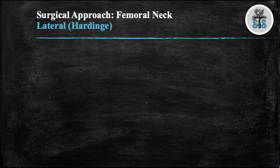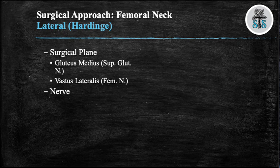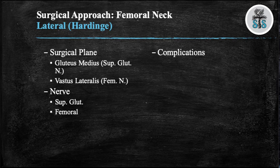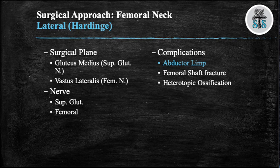The Hardinge, or lateral approach, has its surgical plane between the gluteus medius and the vastus lateralis. The nerve to be aware of is the superior gluteal nerve, approximately 3-5 cm proximal to the greater trochanter. If injured, it can lead to a Trendelenburg gait as this nerve innervates the tensor fasciae latae, gluteus medius, and minimus. It is important to repair the abductors during closure to prevent this complication. The femoral nerve is also at risk medially; place retractors on bone, not soft tissue. Complications include abductor limp, femoral shaft fracture during dislocation, and heterotopic ossification.